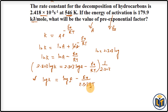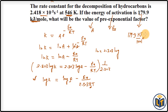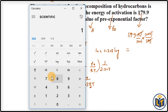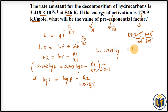Note that R is the gas constant with value 8.314 J/mol·K. Since Ea is given in kJ/mol, we convert it to J/mol: 179.9 kJ/mol × 1000 J/1 kJ = 179,900 J/mol. This ensures the units are consistent.